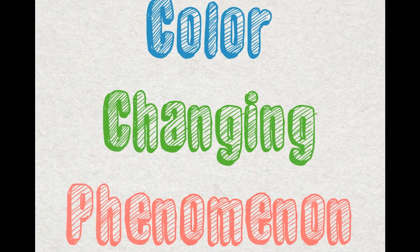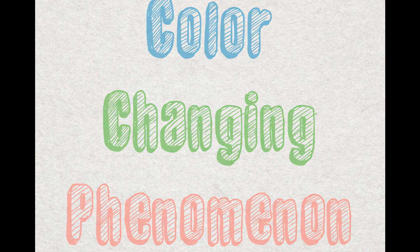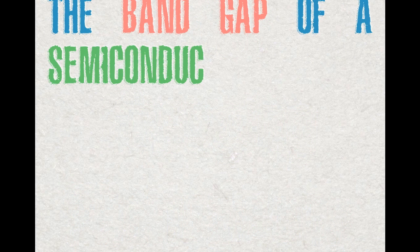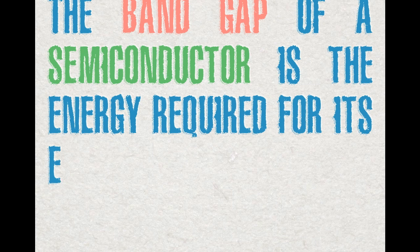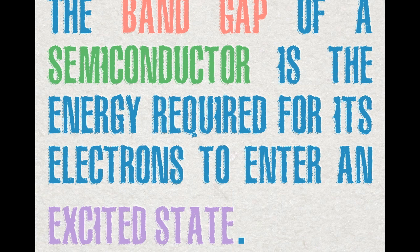This color changing phenomenon is the result of different band gaps between different sized quantum dots. The band gap of a semiconductor is the energy required for its electrons to enter an excited state. Small dots have large band gaps, so they require a lot of energy to enter an excited state.